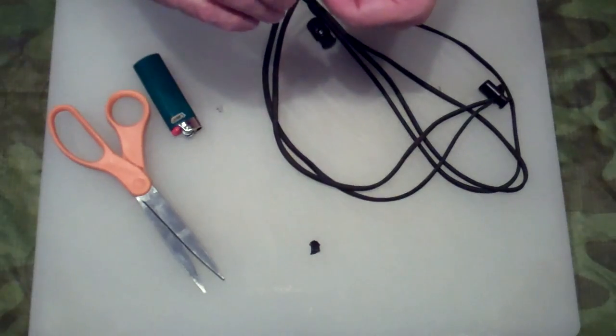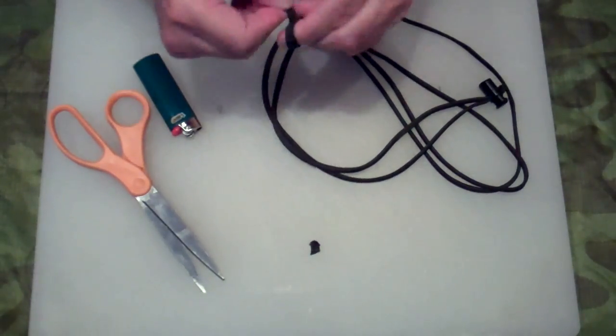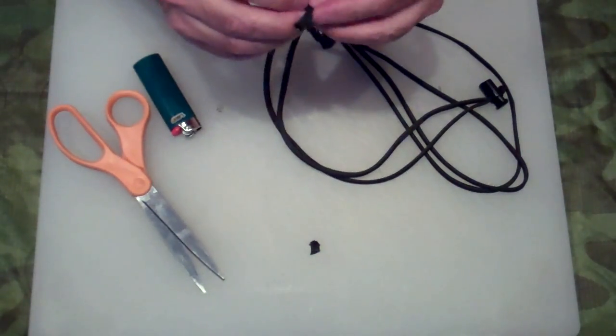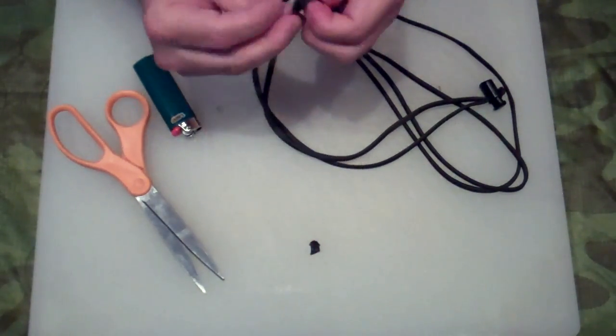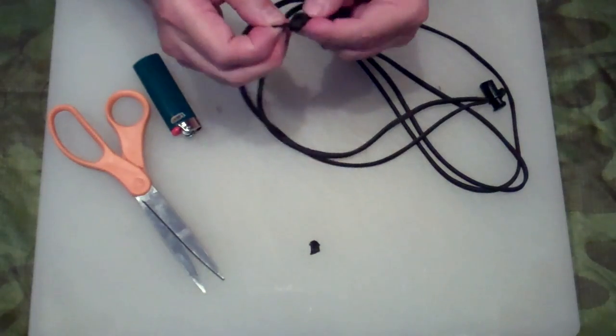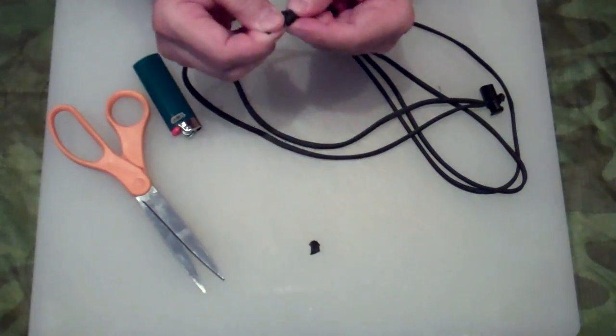Now I'm just going to tie a simple overhand knot at the very end so they're equal length. Dress that knot down.